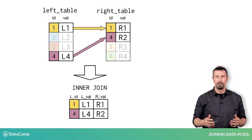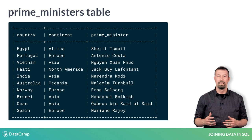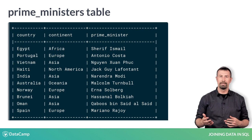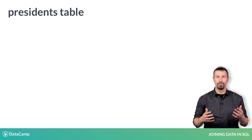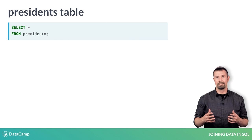Now that you have a sense for how inner join works, let's try an example in SQL. The prime minister's table is one of the tables in the leaders database. It is displayed here — note the countries that are included. Suppose you are interested in determining nations that have both a prime minister and a president and putting the results into a single table. Next you'll see the president's table. Recall the use of select and from clauses as shown for the president's table here.